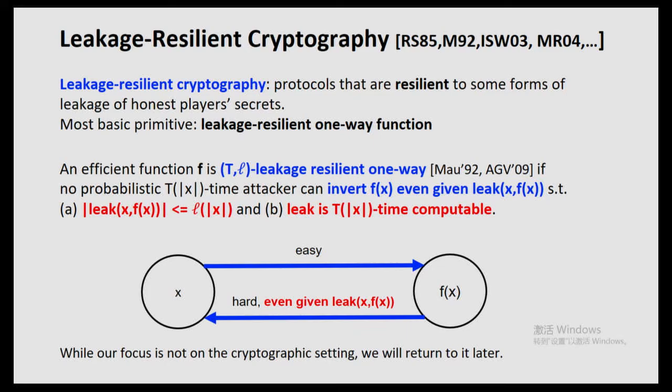More formally, we say an efficient function F is T,L leakage-resilient one-way if no probabilistic T-time attacker can invert F(x), given some leakage from the input x, such that the leakage length is at most L(|x|), and the leakage is computationally bounded — that is, T-time computable. In other words, given the input x it's easy to compute F(x), but it's hard to invert F(x) even with some leakage from the input x. Our focus here is not on the cryptography setting, but we will return to it later if we have time.